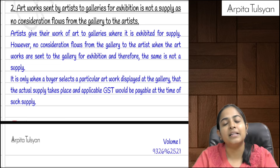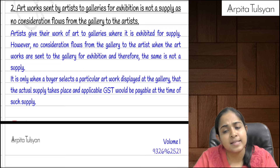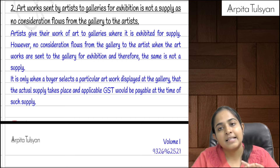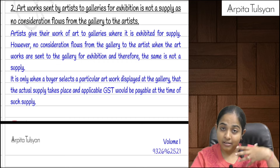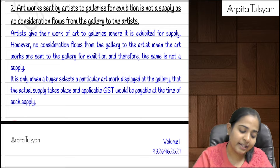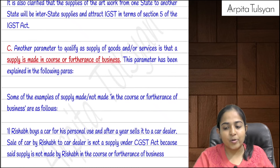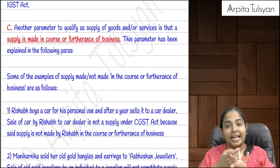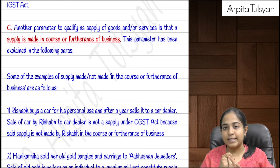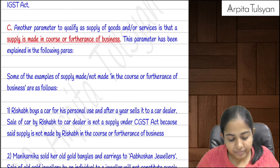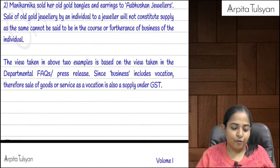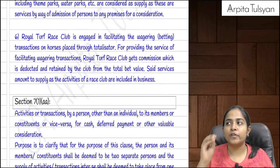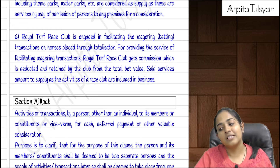If you're sending goods from your premises, you can use a delivery challan along with an e-bill. But this will not be considered a supply until the transaction materializes — only when there is a customer ready to take the product will it be considered a supply. So in section 7(1)(a), three parameters: supply of goods or services, consideration, and in the course or furtherance of business — if all three are fulfilled, it is a supply.